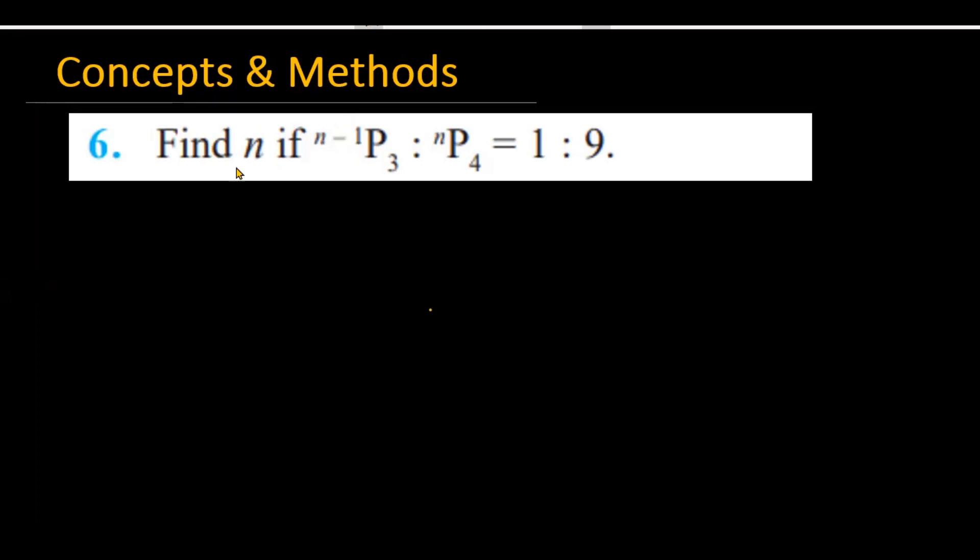The question is: find n if n-1p3 is to np4 is equal to 1 is to 9. So let's see how we are going to solve the given problem.